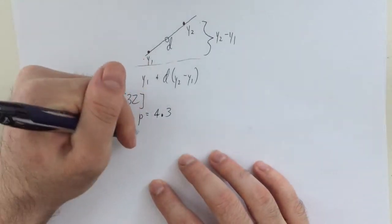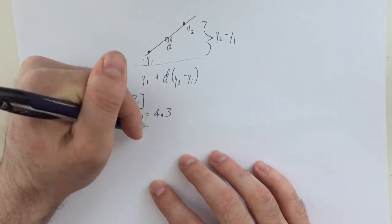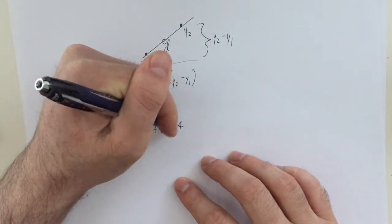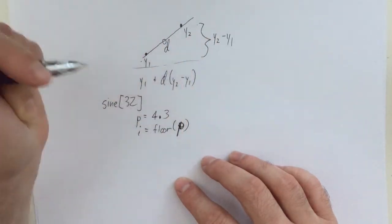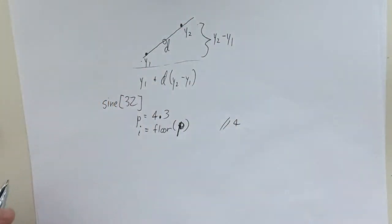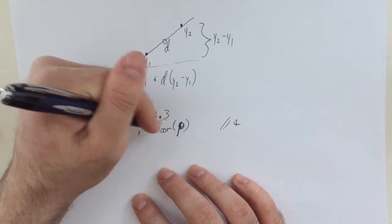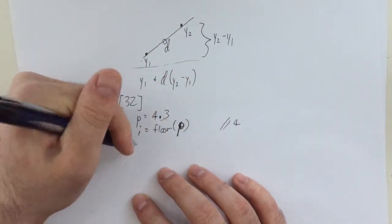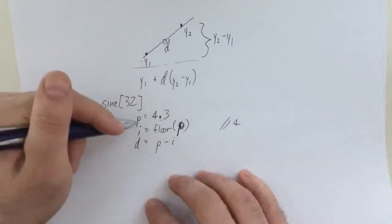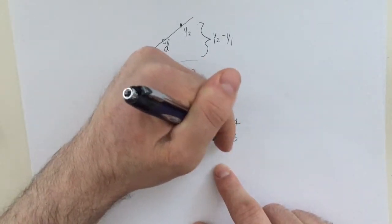And so what we need is we need an index, let's say an integer version of p, which is going to be the floor. In floating point terms, floor of p. That's going to be equal to 4 in this example. And now we also need the kind of the decimal part of this, the distance between the two points. And so this is going to be your distance is going to be p minus i. So the 4.3 minus 4 yielding 0.3, right? And that's correct.